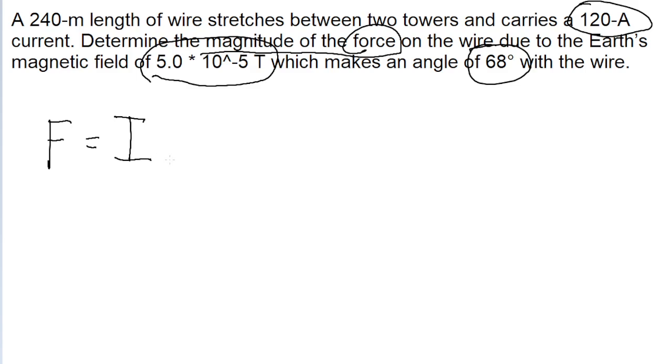And it's equal to the current multiplied by the length of the wire, multiplied by the strength of the magnetic field, multiplied by the sine of theta, the angle between the wire and the field.